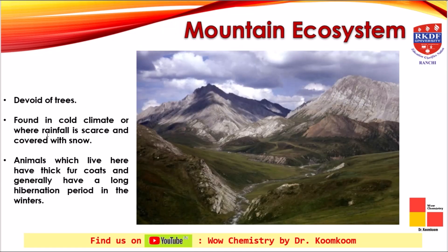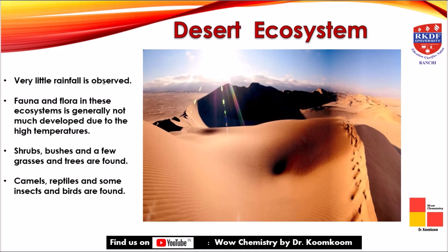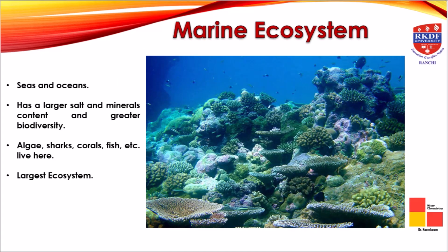Next is the mountain ecosystem, which is generally devoid of trees, consisting of mountains found in cold climates and generally covered with snow. Animals with thick fur, for example bears, are generally found here and have long hibernation periods. The last terrestrial type is the desert ecosystem, found where rainfall is very scarce. Flora and fauna are not well developed due to very high temperatures; small shrubs and bushes like cactus are found here, along with animals like camels and some reptiles.